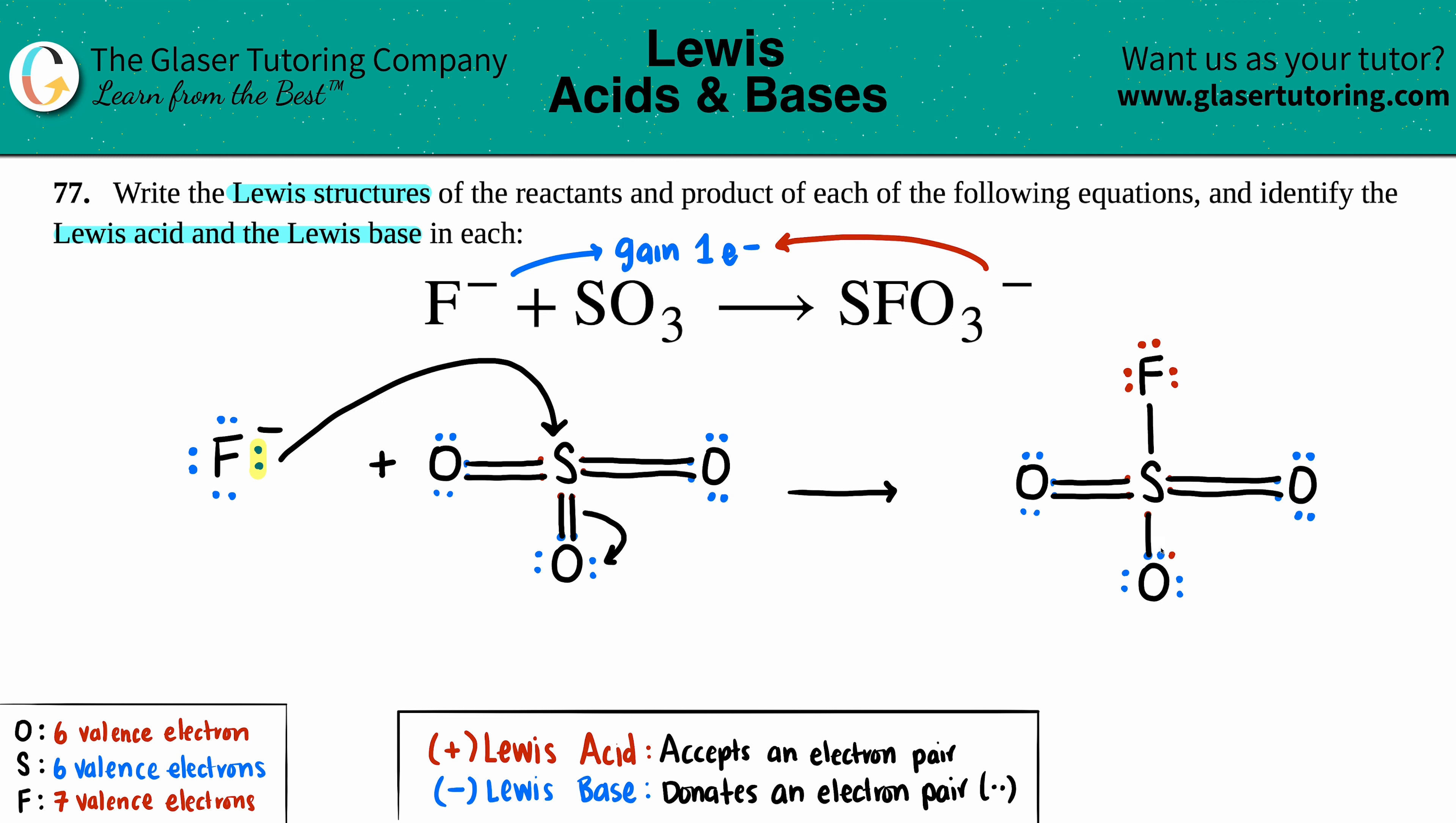And if you notice that the sulfur now has the expanded octet again: two, four, six, eight, ten, twelve. And all the elements on the outside all have the octet. Just know that who has the negative charge—if we did the formal charge for all of them, turns out that this oxygen will now have that negative charge. But that's it.